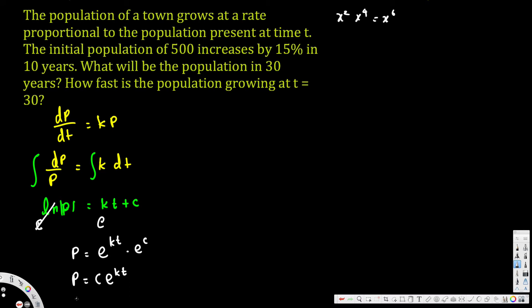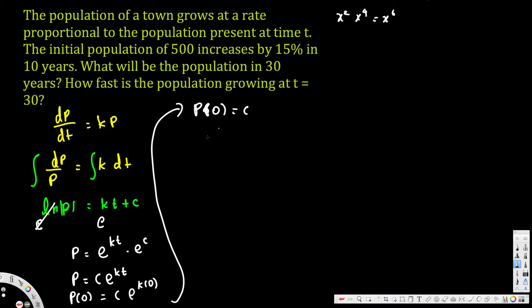Now we need to find what C is. If we plug in t = 0, we get P(0) = C · e^(k·0) = C · e^0 = C · 1, so P(0) = C. Therefore C equals P(0), which is the same as P₀, the initial population.